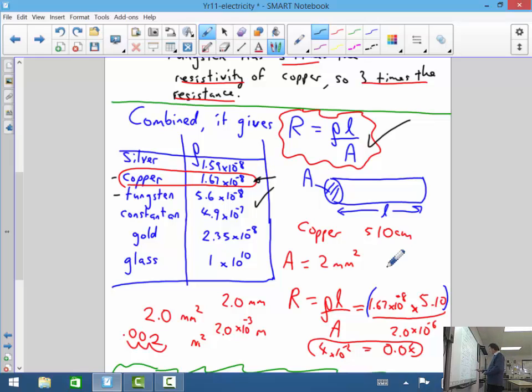If you put that into the formula there, then, here. And times by the length of the particular wire we've chosen here, which is 510 centimetres. And the area, you will get...